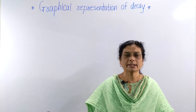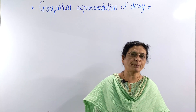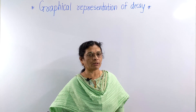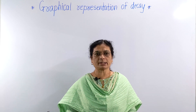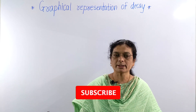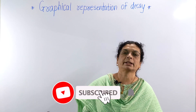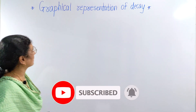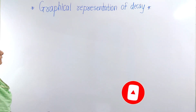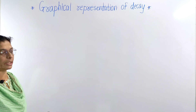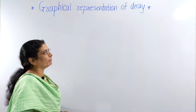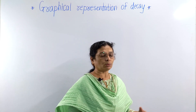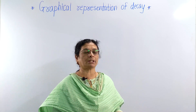Hello students. Until now in the topic of nuclear chemistry and radioactivity, we have considered what radioactivity is, what the expression for decay constant is, and what the half-life period is. Now in this video, we shall consider the graphical representation of decay — how the rate of decay depends upon time or how it varies with respect to time.